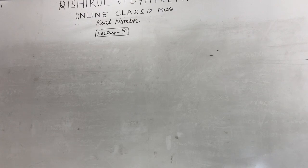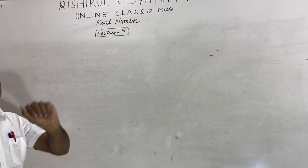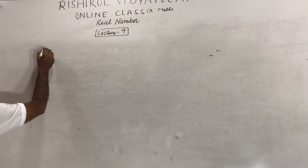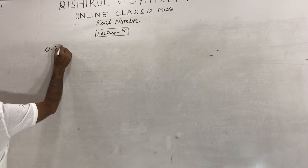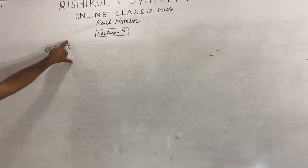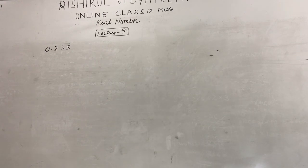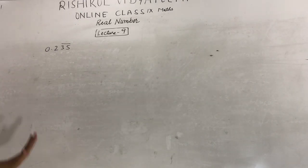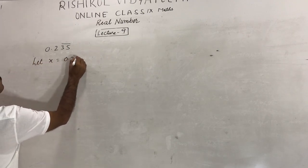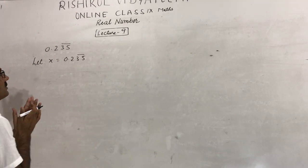Good morning students. In the last lecture I discussed how you can express 0.6 bar, 0.67 bar, or 0.001 bar in the form of p upon q. The next question is how can you express 0.235 bar — where the bar is only on 35 — in the form of p upon q. First of all, suppose that x equals 0.235 bar.